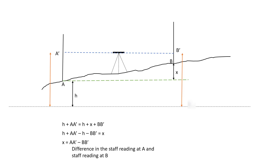This shows that the difference between the levels of these two points is given by the difference in staff readings at points A and B. This is the principle of leveling. However, here the datum line and everything is horizontal, which would be ideal if our earth were flat. Since our earth is not flat, we have to consider the effect due to the curvature of the earth.